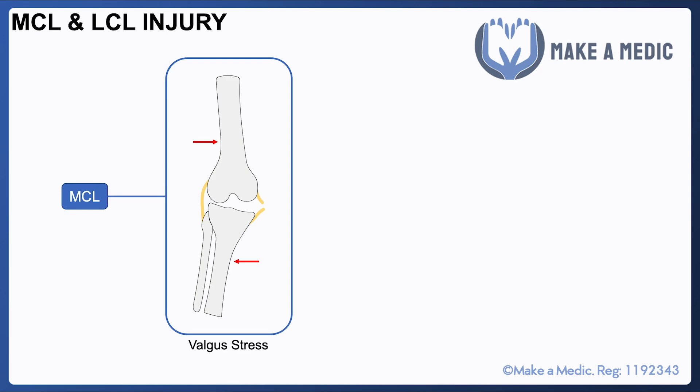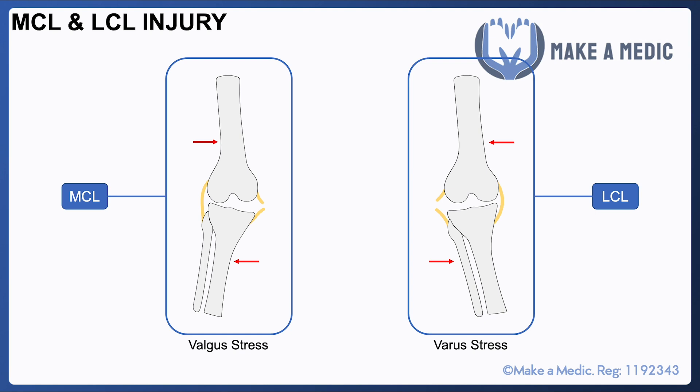With medial and lateral collateral ligament injuries, the examination is fairly simple. They are designed to prevent excessive valgus or varus movement at the knee joint. For a medial collateral ligament tear, you hold the leg straight, secure the knee joint, and apply a little valgus force on the tibia and fibula — you'll notice more give than in someone with intact ligaments. For a lateral collateral ligament injury, you apply a varus stress instead.